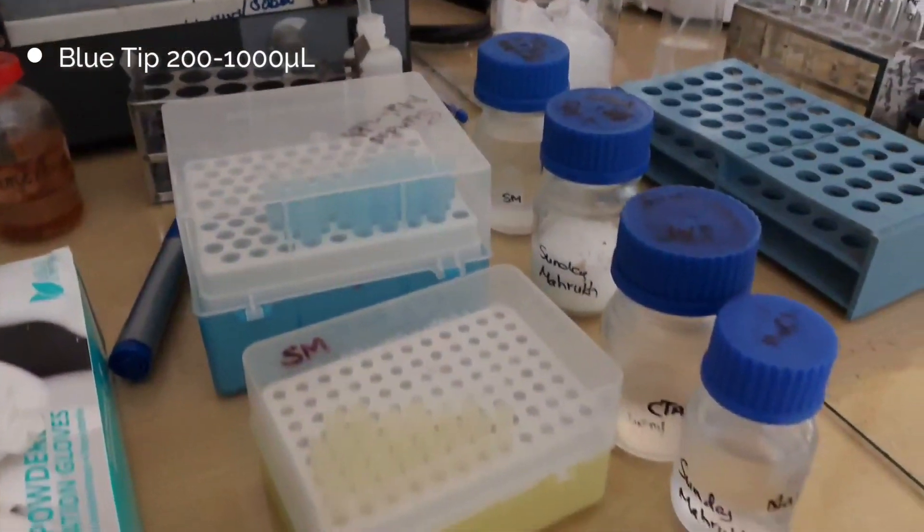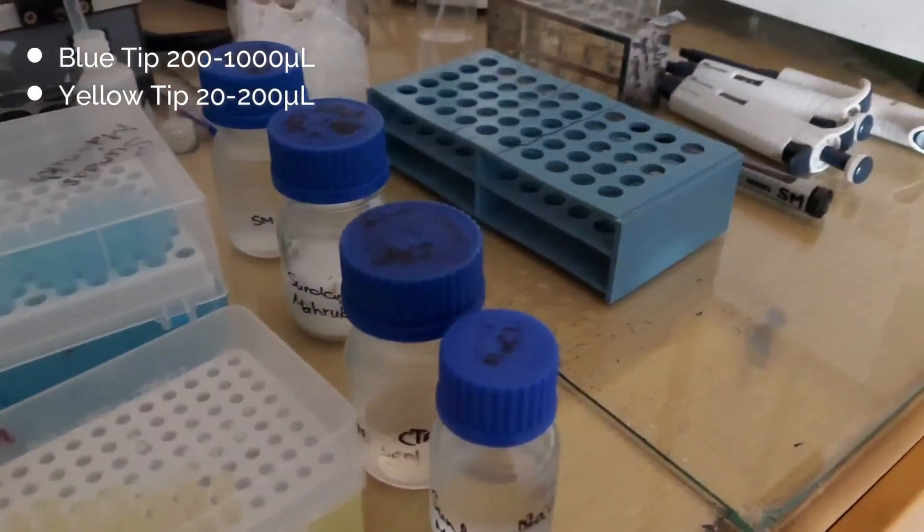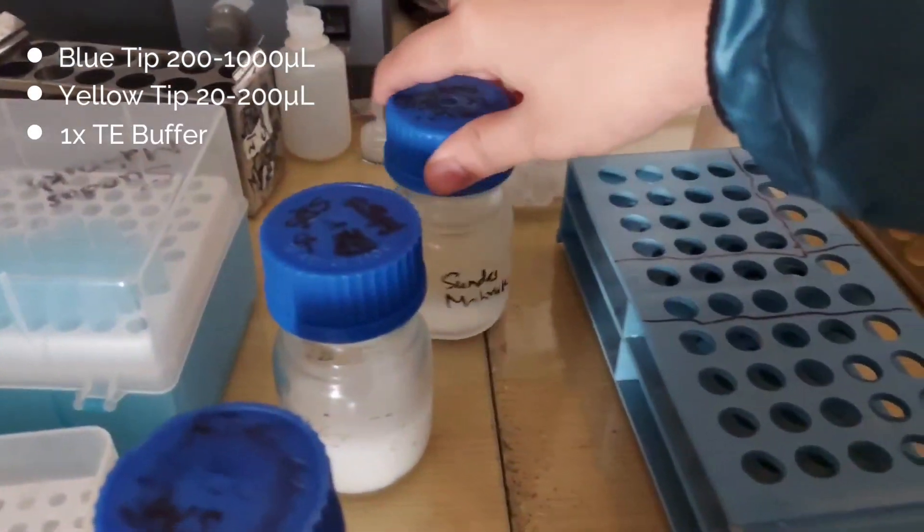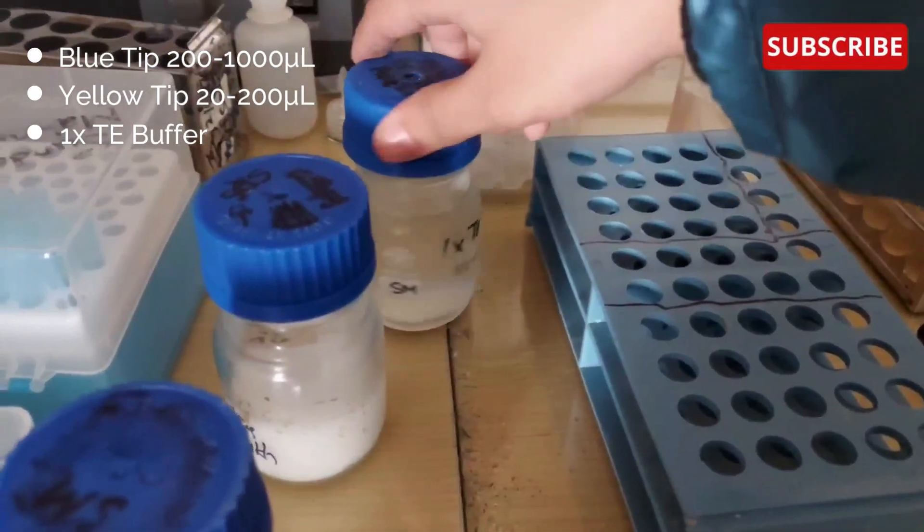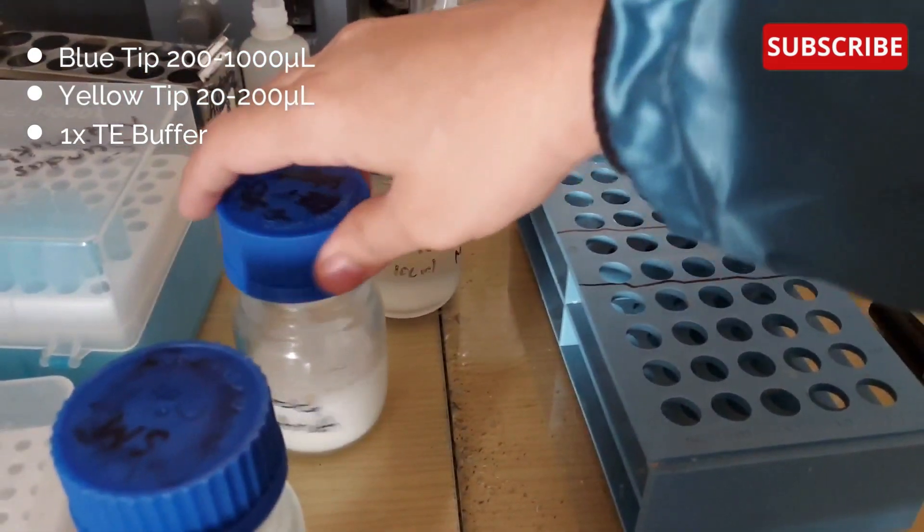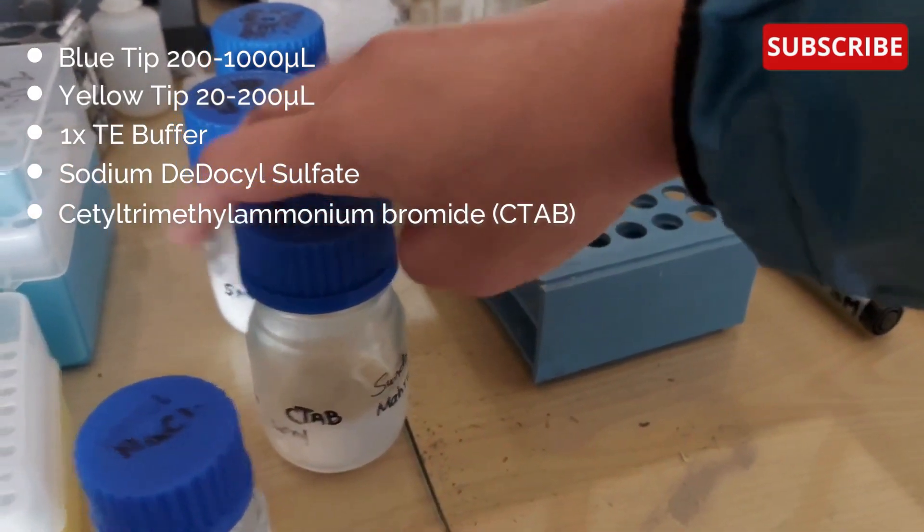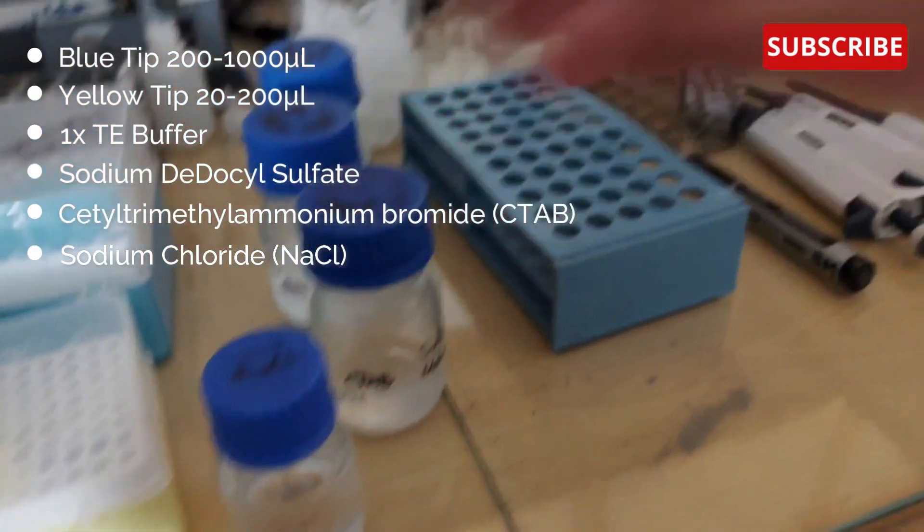You will need blue tip box, yellow tip box and our solutions for DNA isolation. Here we have 1X TE which is composed of Tris and EDTA. Then we have SDS, next we have CTAB and last NaCl.